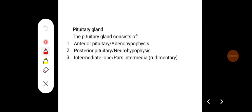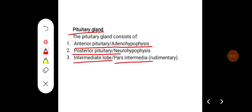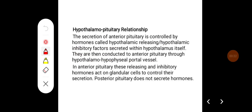Pituitary gland. The pituitary gland consists of anterior pituitary, which is also called adenohypophysis, posterior pituitary, which is also called neurohypophysis, and intermediate lobe, which is also called pars intermediata, which is rudimentary.